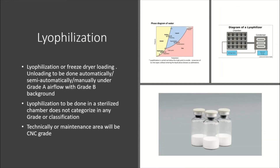Lyophilization does not have any specific requirement for grading. For half-stoppering, the vial or container moves to the lyophilizer — loading and unloading are performed under LAF with a background of Grade B. The lyophilization chamber itself is not categorized in any grade, but it is a sterilized chamber with subsequent controls of washing, cleaning, and SIP sterilization before use. The technical/utility part of the lyophilizer can be in the CNC area without impact on the cleanroom.